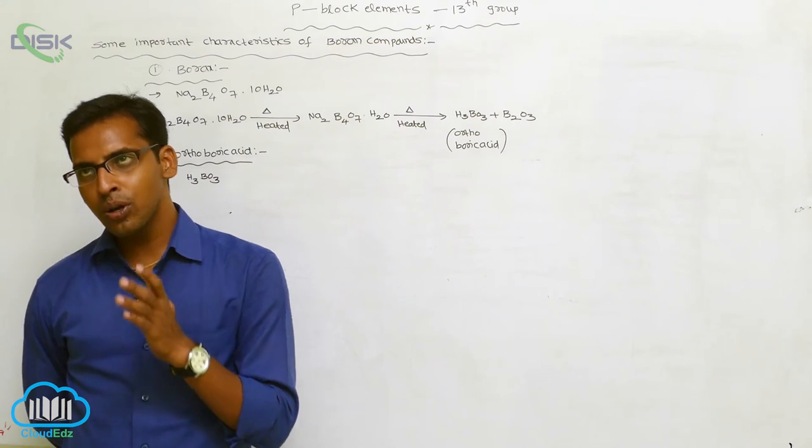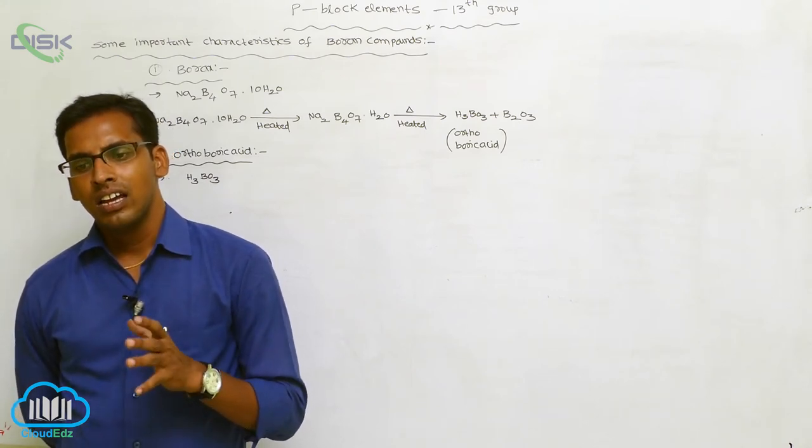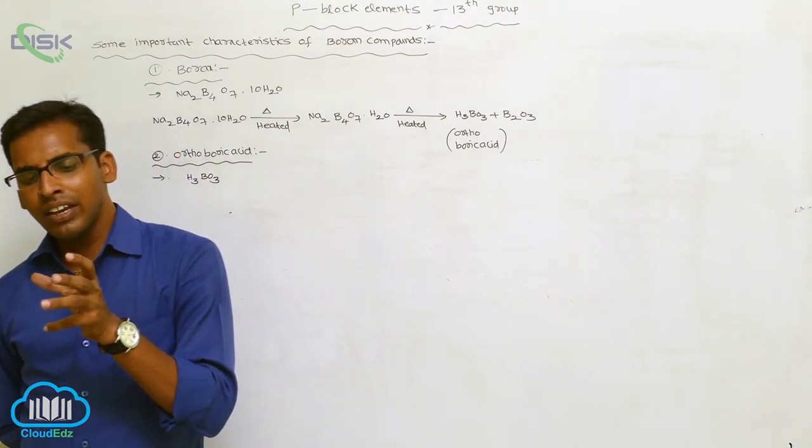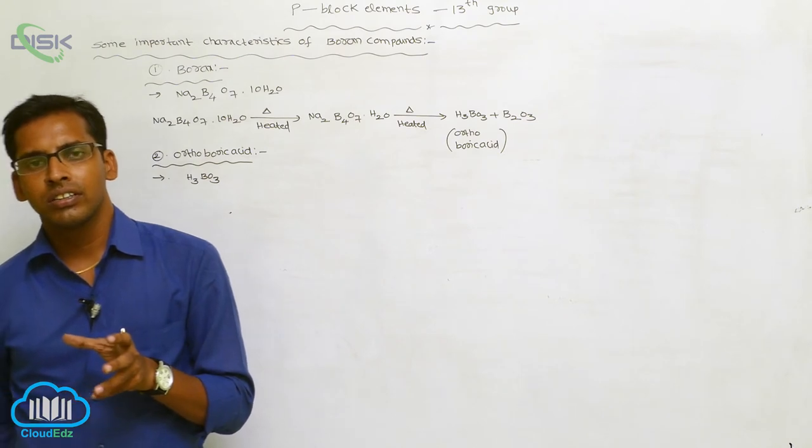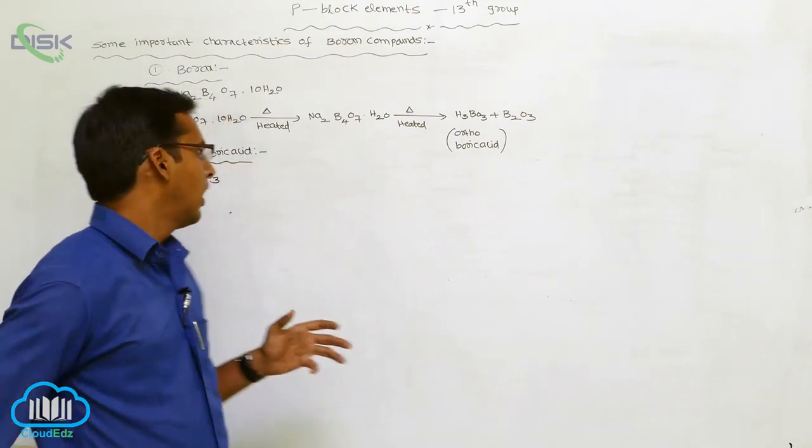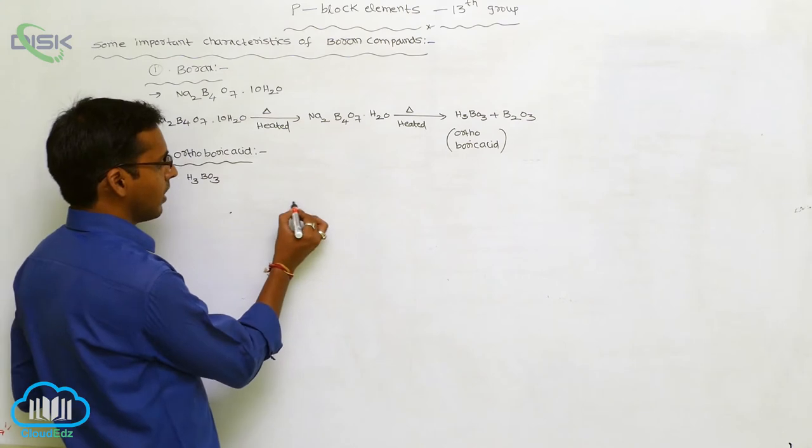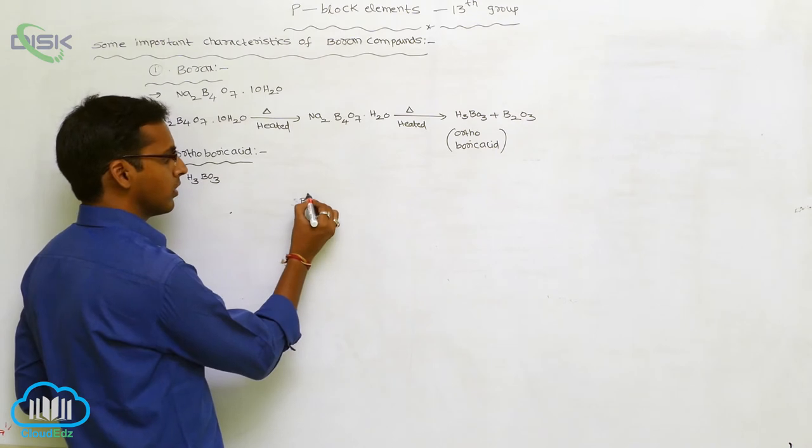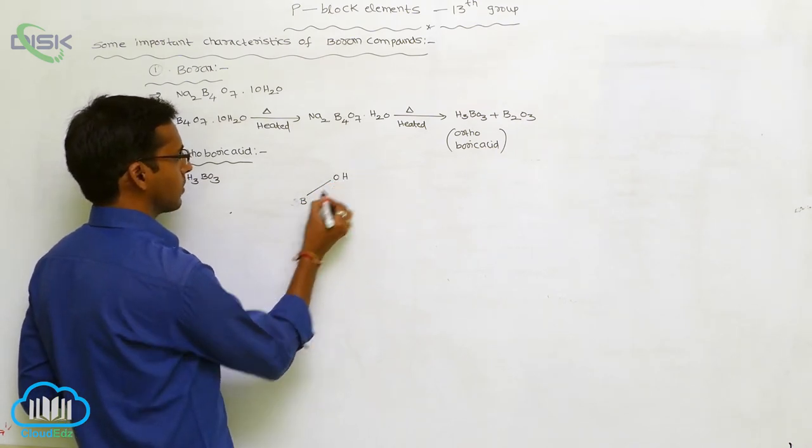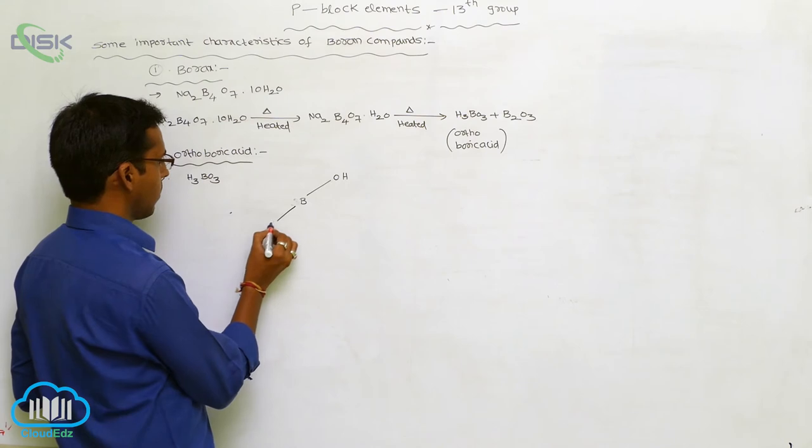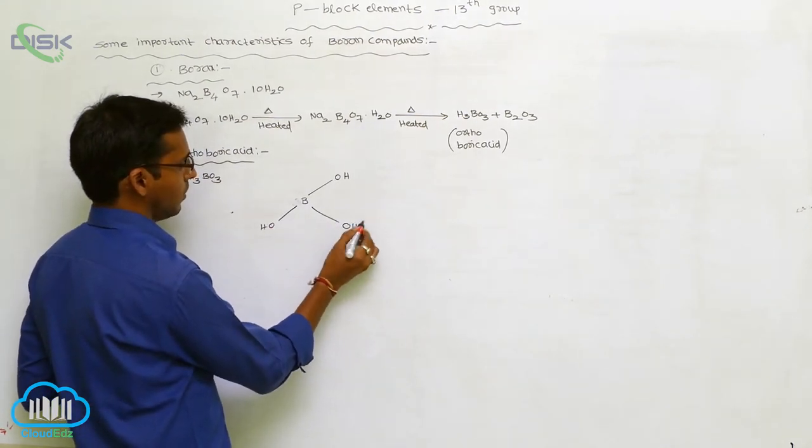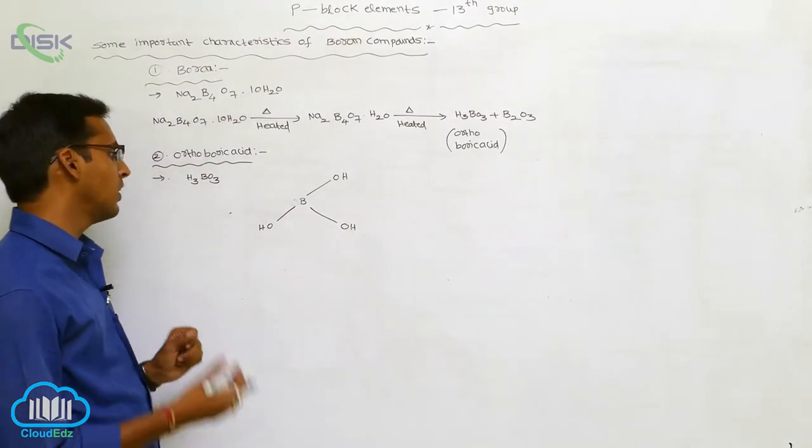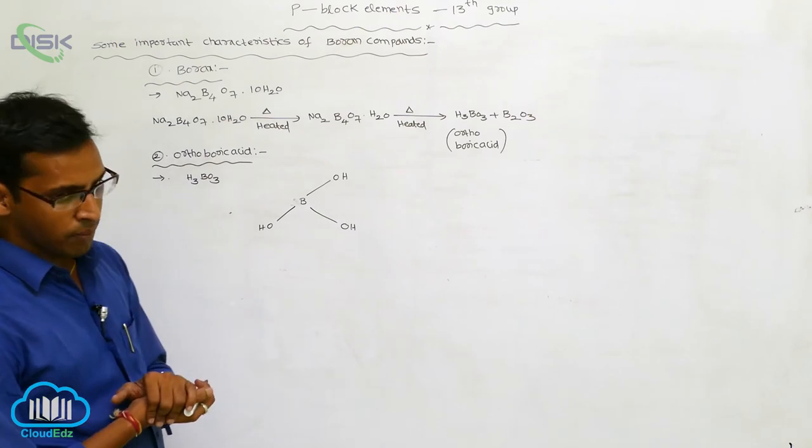This orthoboric acid is involved in hydrogen bond formation. So whenever it is involved in hydrogen bond formation, it appears as a dimer form like this. See here, H3BO3. Boron containing OH, OH, another OH. Three hydrogens, one boron, one oxygen. It is involved in hydrogen bond formation.